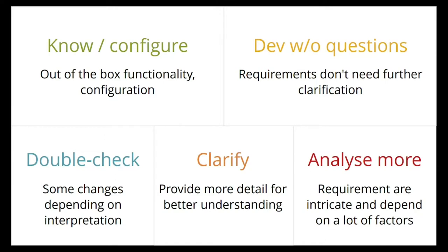Clarify — we are kind of on track, we think we know what you mean, but can you give us a little more detail so we can make sure that what we think you need is actually what you need. And then the last category, in red because it's the most difficult one, is Analyze More — requirements in the RFP are so high level that you could do them a hundred different ways. These are not categories you see in an RFP spreadsheet. But during a workshop with a client, we need to get to the meat very quickly, and I didn't really want to spend time on Know and Configure, because it was already there.